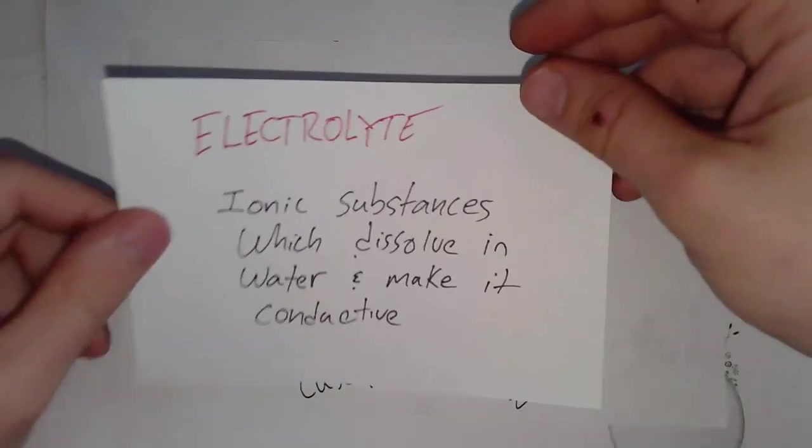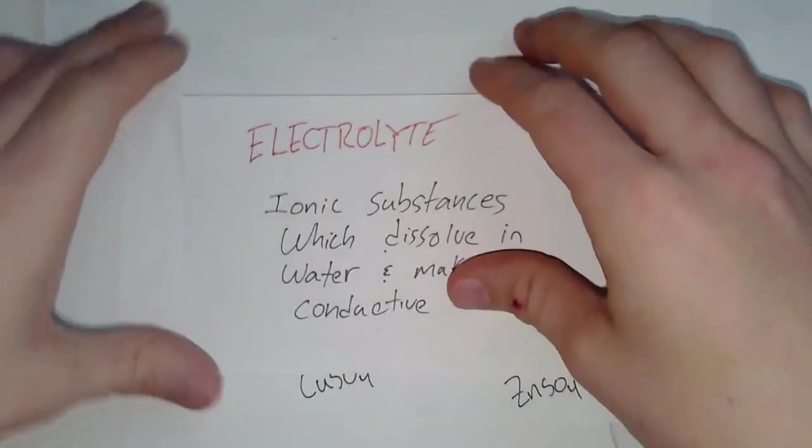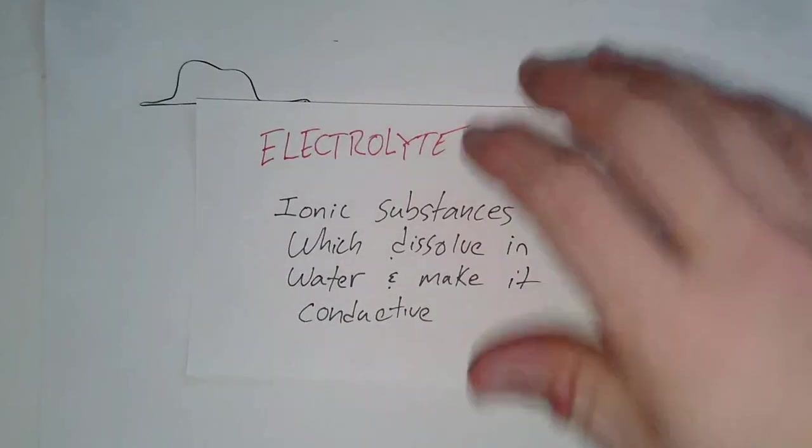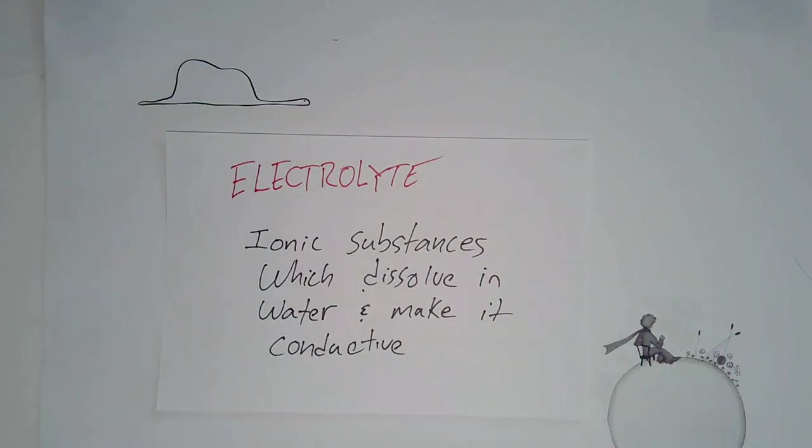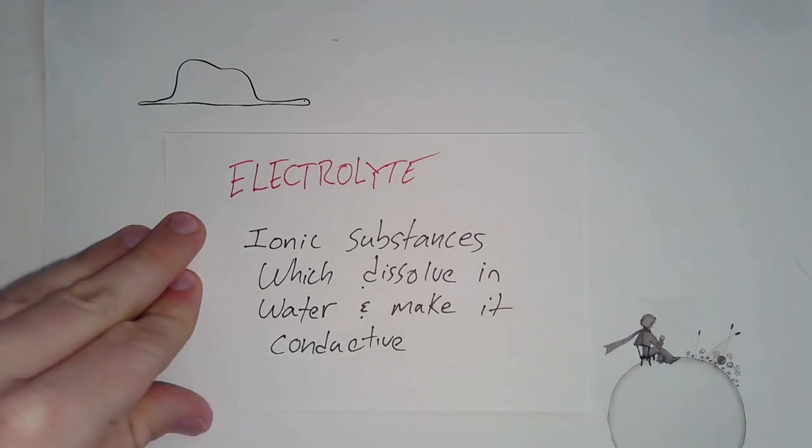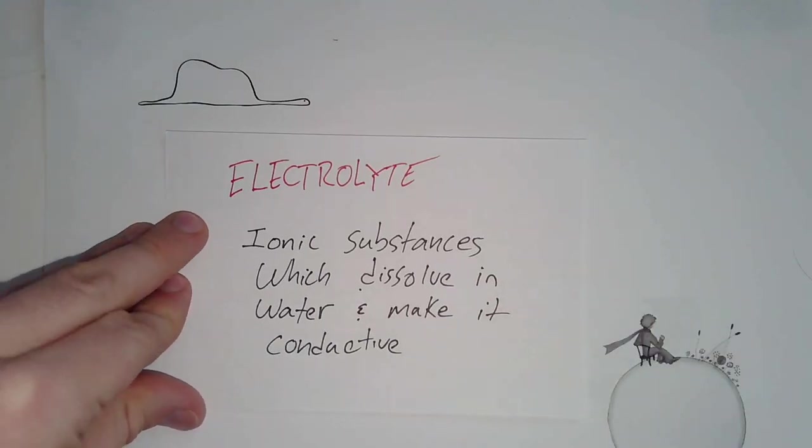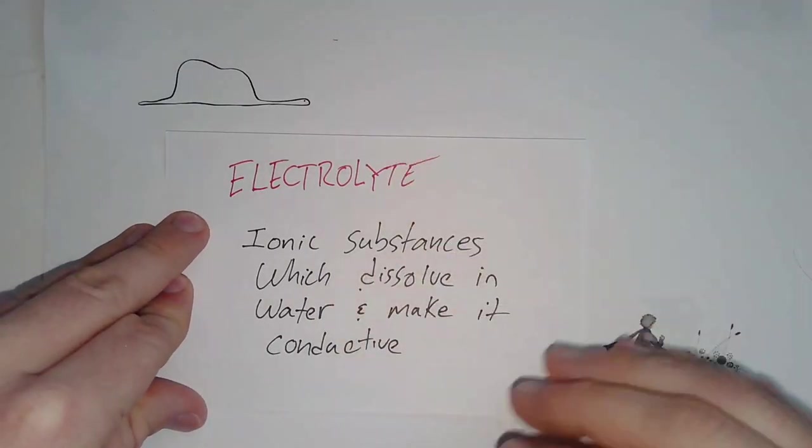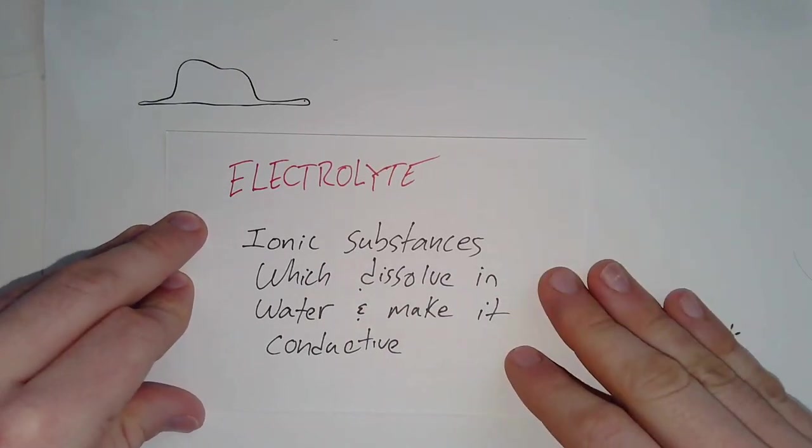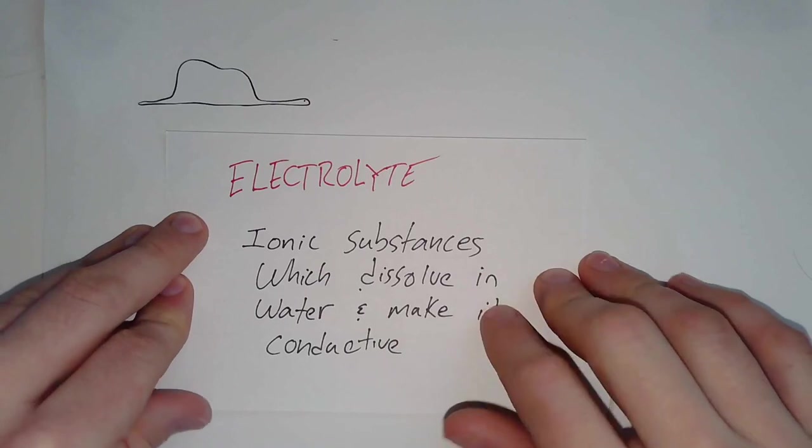So to answer that question, I think the easiest definition is an ionic substance which dissolves in water or more accurately, disassociates in water and makes it conductive. So if I am looking for things that dissolve in water and make it conductive, which of these things could even possibly be used as an electrolyte? Some of these wouldn't work by this definition. So take a look at them and figure out which one fits this definition.